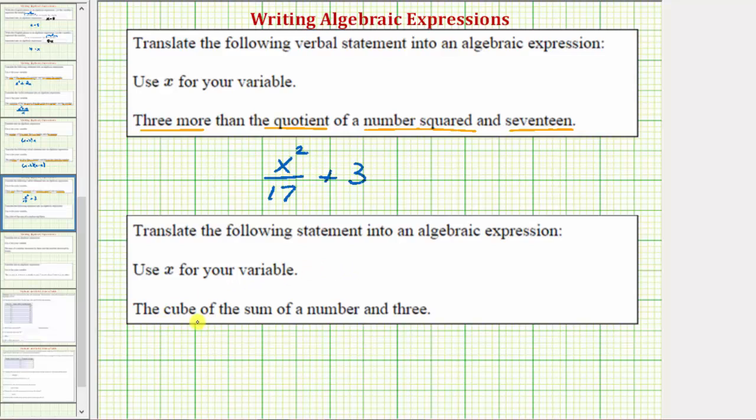We're given the statement the cube of the sum of a number and three. So the key words here are the cube of a sum. So we'll be raising a sum to the third power. And the sum is of a number and three.